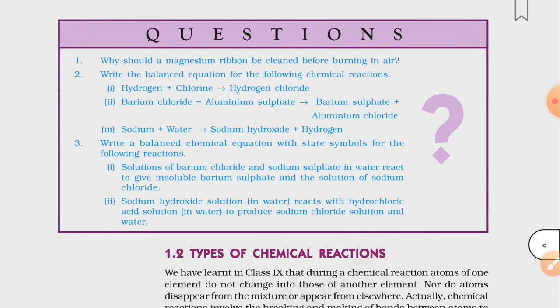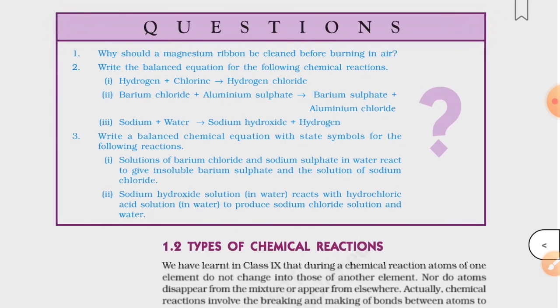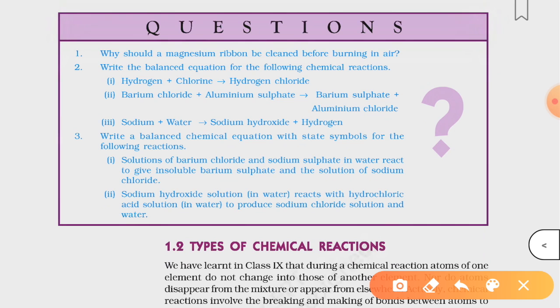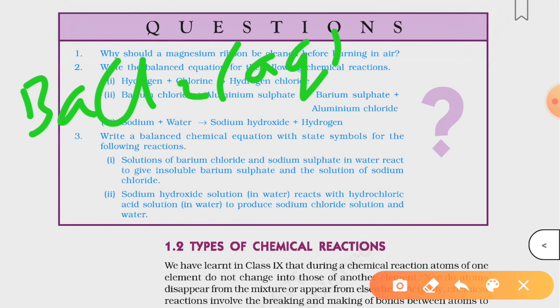Third question you must try it by yourself. You have to write a balanced chemical equation with state symbols. Barium chloride solution, so barium chloride, the formula of barium chloride is BaCl2. It has been said solution, so you will write aqueous along with it.